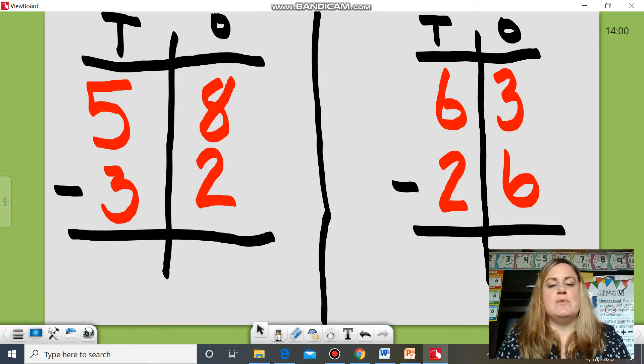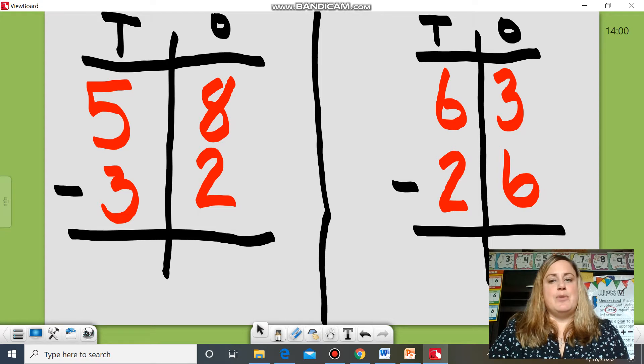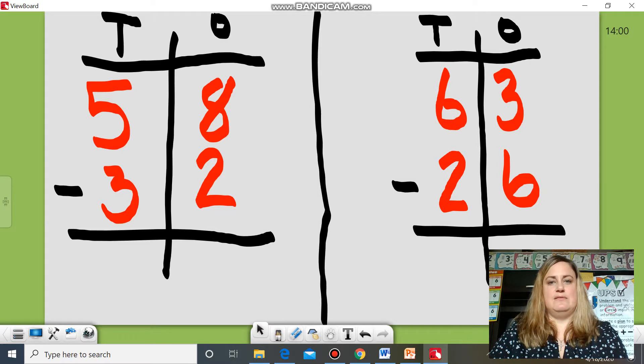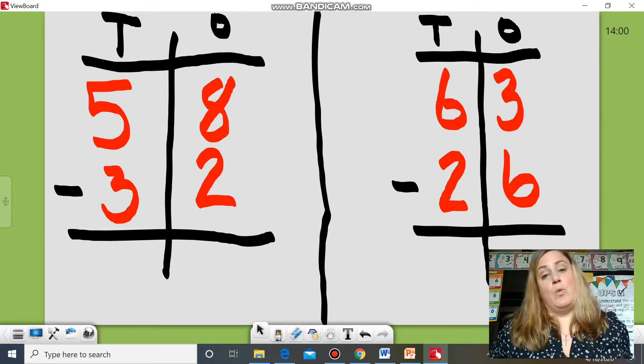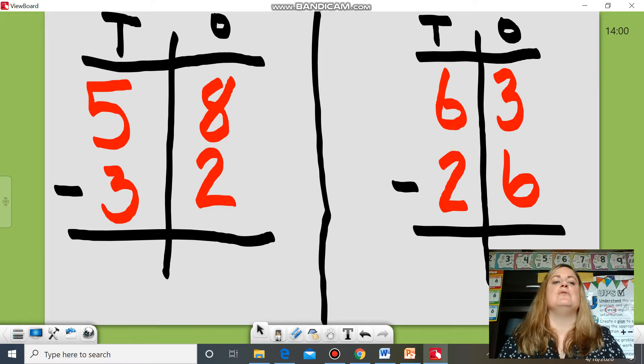So I'm going to start with two digit and then gradually work up to three digit next week. So on my screen you'll see two separate problems and you'll see I've already divided them up by their tens and ones place because hopefully you've watched the place value house video, you reviewed, you remember the importance of the place value.